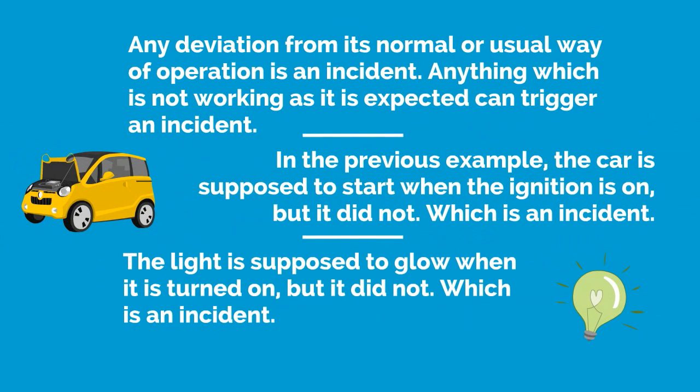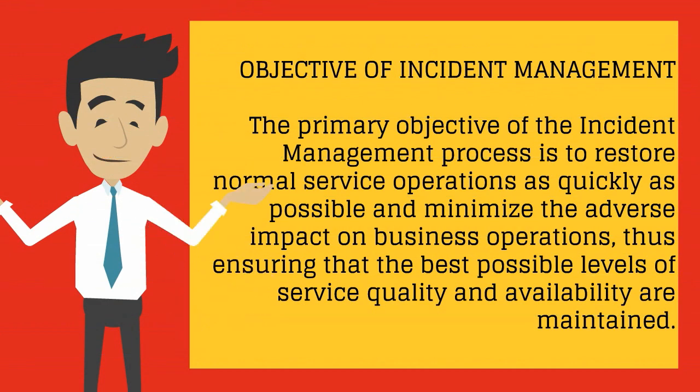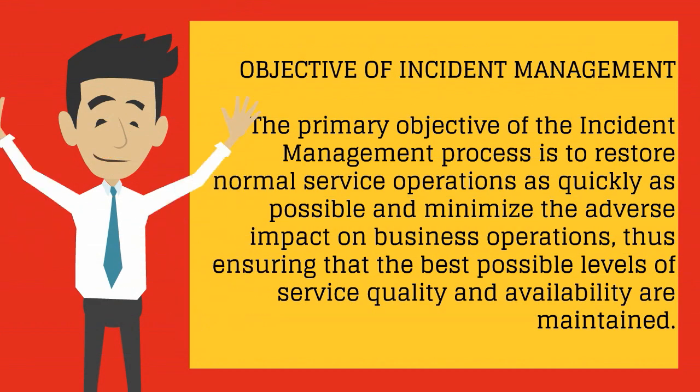The light is supposed to glow when it is turned on, but it did not, which is an incident. In these examples, all deviated from its usual way of working, which is an incident. What is the objective of incident management?